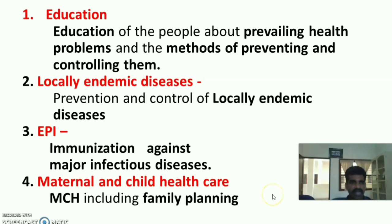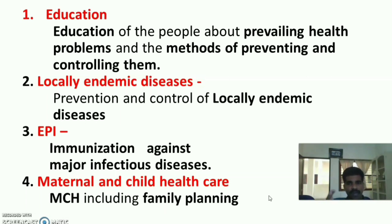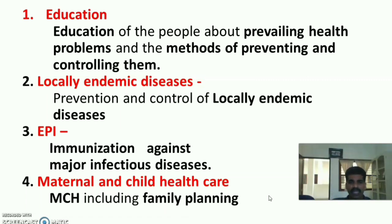The first element is Education — education of the people about the prevailing health problems and the methods of preventing and controlling them. Education of the people — individual, family or community — about the prevailing health problems, meaning the present health problems in their community, and the methods of preventing and controlling those health problems.